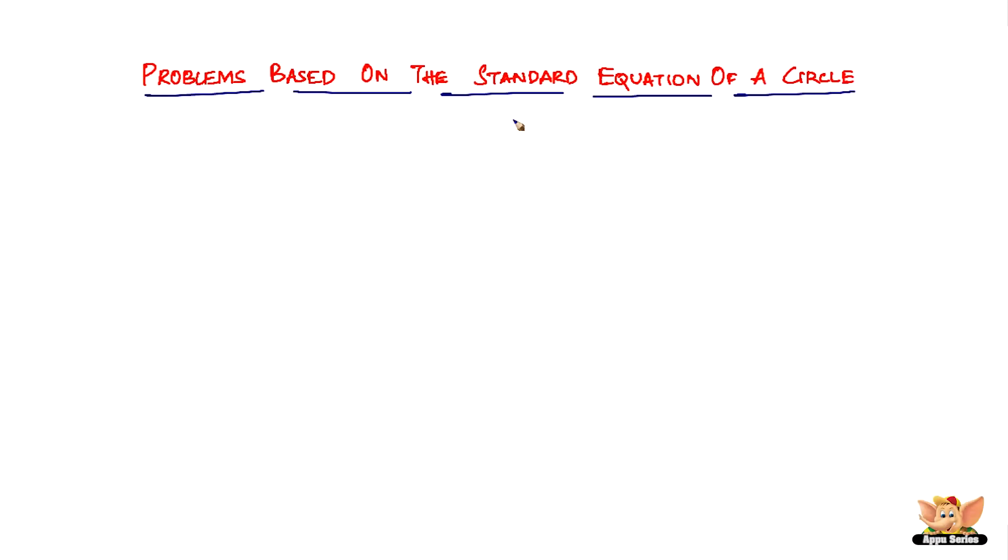In this video, let us solve problems based on the standard equation of the circle. Here we've got a problem which reads: find the equation of a circle whose center is (2, -3) and radius 5.